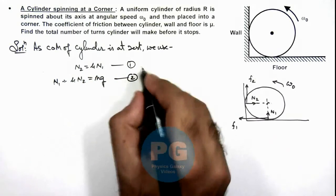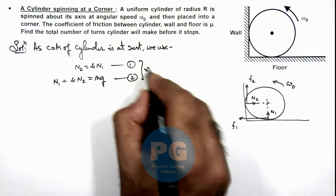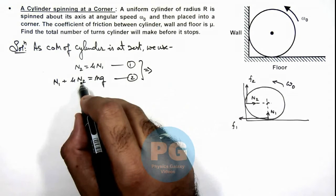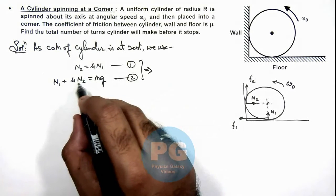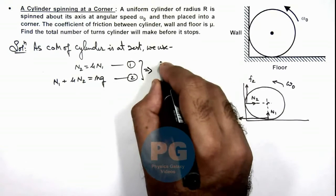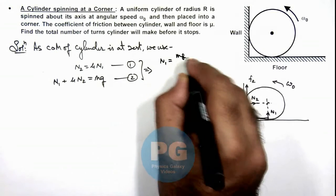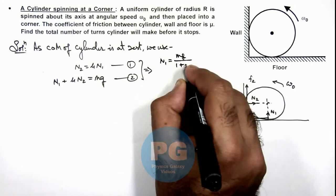Now from these 2 equations here, if we substitute the value of n2 over here, this becomes 1 plus mu squared n1 is mg. So this gives us the value of n1 which is mg divided by 1 plus mu squared.